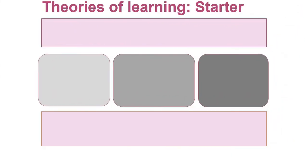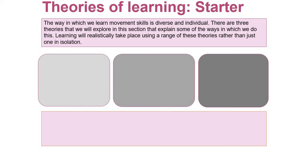So a little starter task - I'd like you to try and pause the PowerPoint and have a go at this starter task once we've gone through it. The way in which we learn movements and skills, particularly in a sporting context, is very diverse and very individual. We'll have different learning styles and learning methods. There are three theories that we will explore in this section. Learning will realistically take place using a range of these theories rather than just one in isolation, like a continuum, but you may have a predominant learning method.